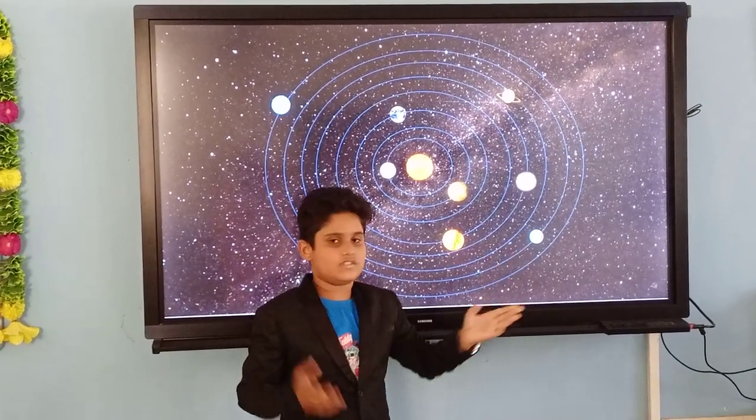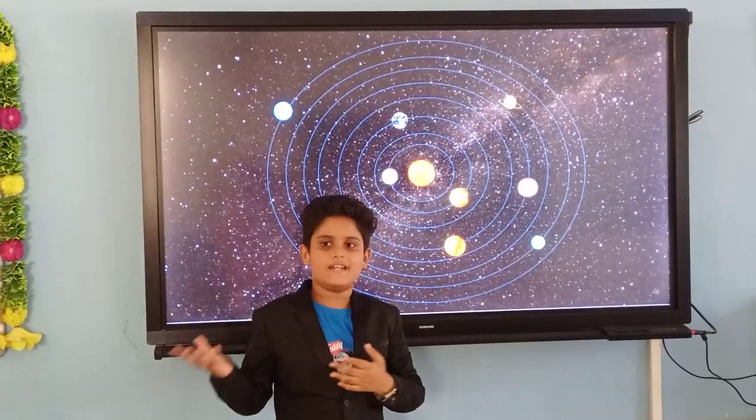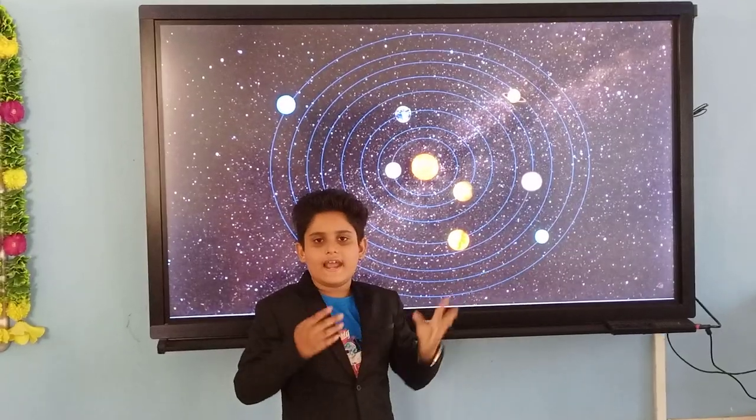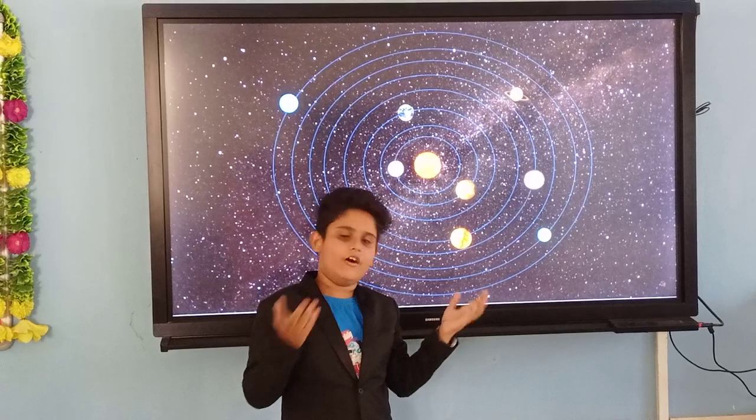Next is Uranus. Uranus is the seventh planet in the solar system. It is a moving color, and it is made up of gases.